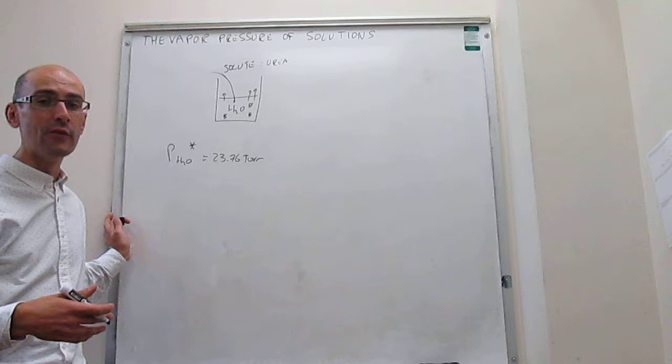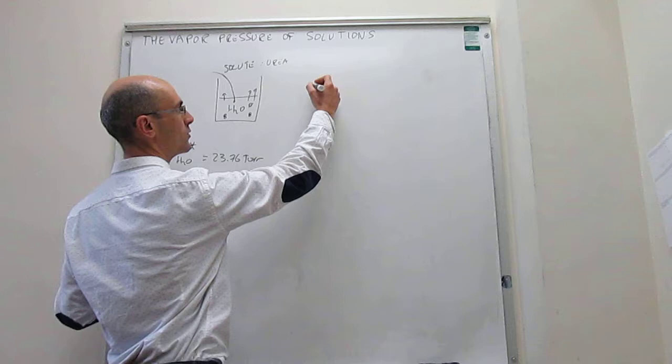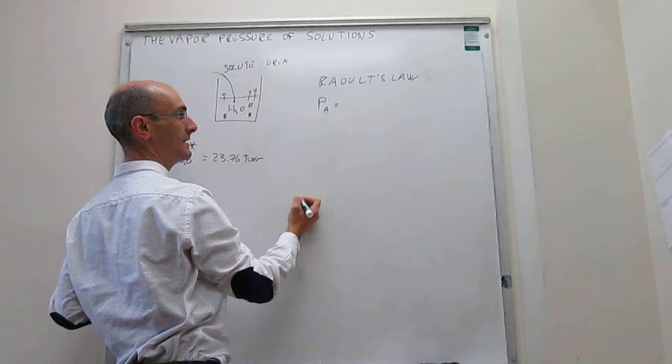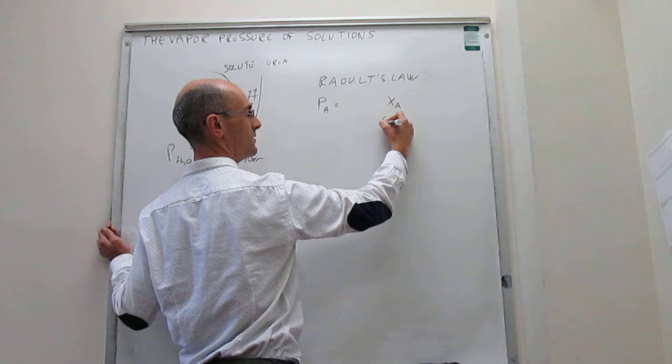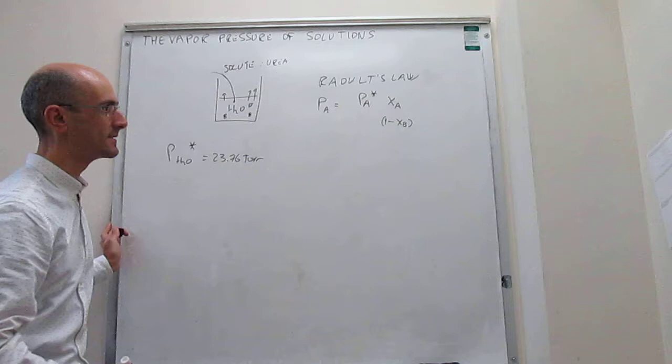Now there is a direct proportionality between the amount of solute that you have in that solution and the vapor pressure of the solvent. And that is what we call Raoult's law. It turns out that the vapor pressure of that water, that solvent, in the solution, is directly proportional to the mole fraction of the solvent, or 1 minus the mole fraction of the solute. And the proportionality is actually the vapor pressure of the liquid when pure. This is Raoult's law.